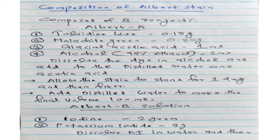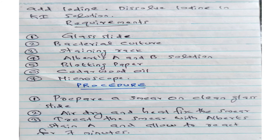To prepare Albert A, dissolve the dye in alcohol and add to distilled water and acetic acid. Allow the stain to stand for one day and then filter the solution. Add distilled water to make the final volume up to 100 ml. For Albert B solution: iodine 2 gram, potassium iodide 3 gram. Dissolve potassium iodide in water and then add iodine to make the iodine-potassium iodide solution.